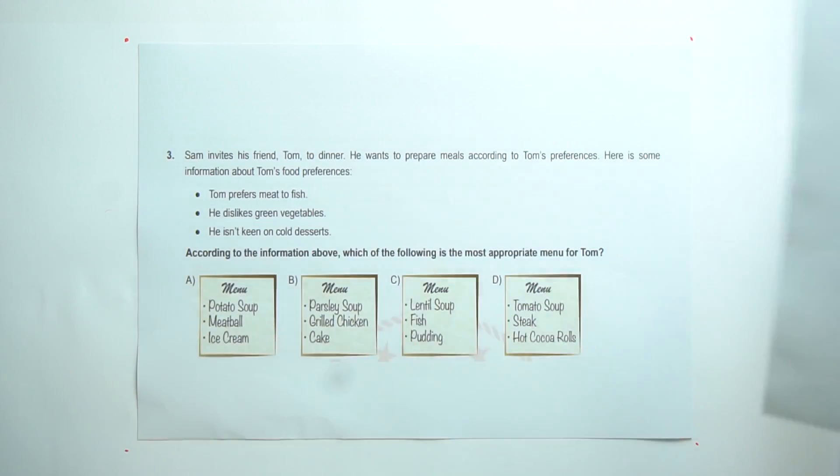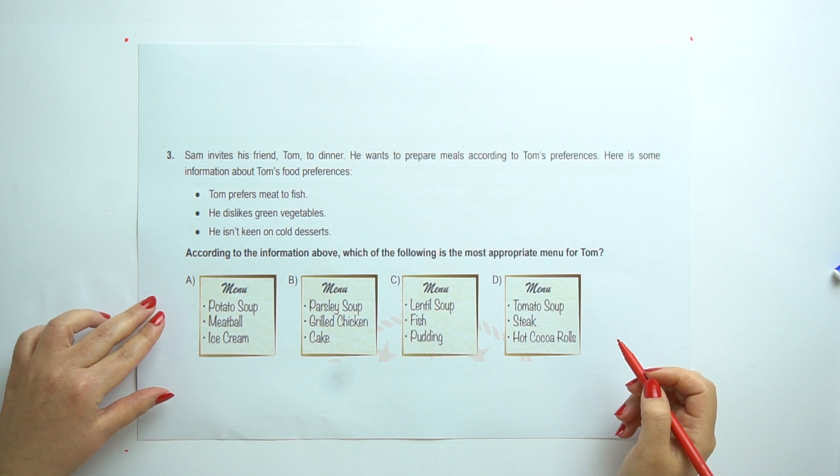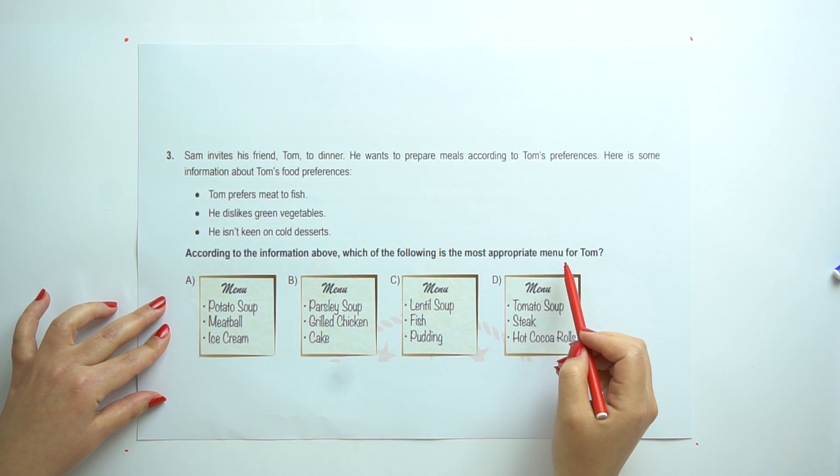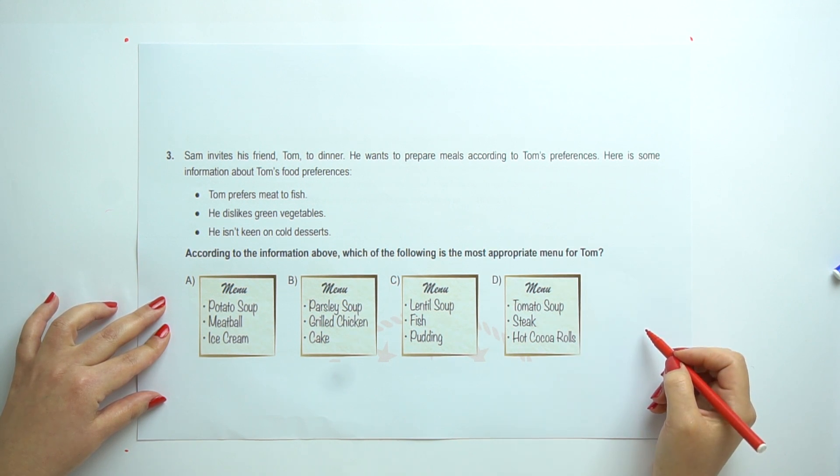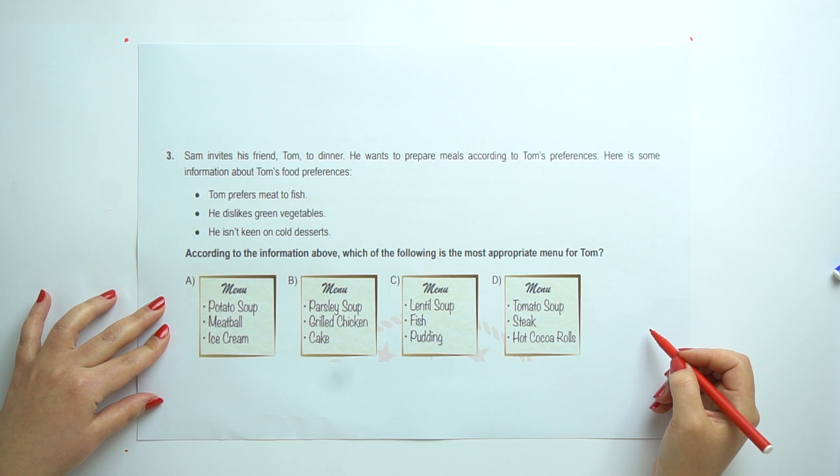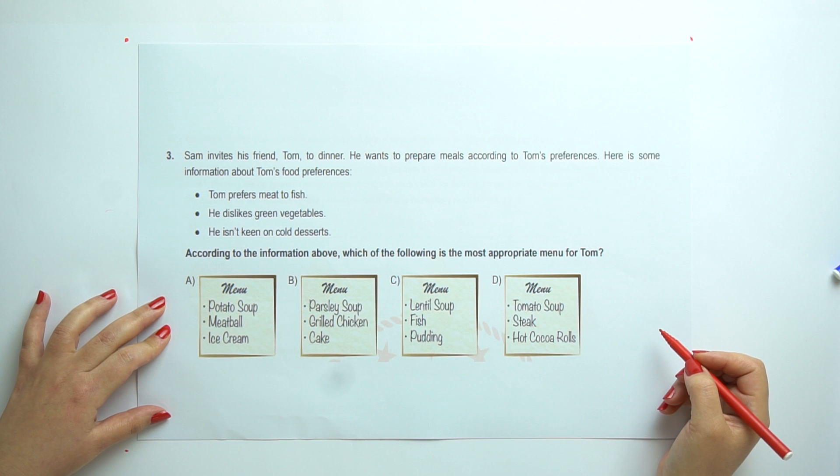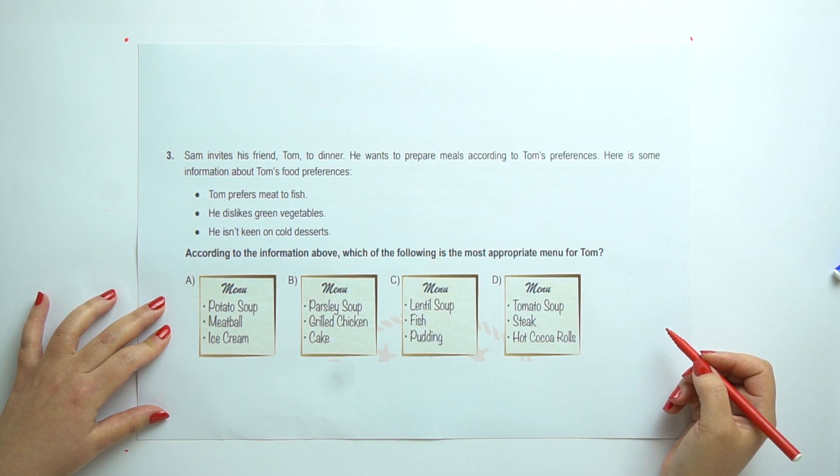Okay, question 3. According to the information above, which of the following is the most appropriate menu for Tom? Sam invites his friend Tom to dinner. He wants to prepare meals according to Tom's preferences. Here is some information about Tom's food preferences. Tom prefers meat to fish. He dislikes green vegetables. He isn't keen on cold desserts.